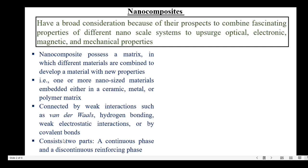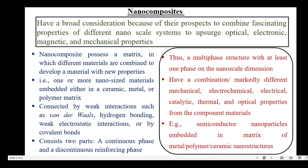A nanocomposite consists of two parts: a continuous phase and a discontinuous reinforcing phase. Therefore, a nanocomposite is a multi-phase structure with at least one phase on the nanoscale dimension. It possesses a combination of different mechanical, electrochemical, electrical, catalytic, thermal and optical properties from the constituent materials.